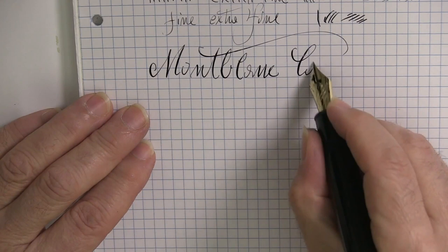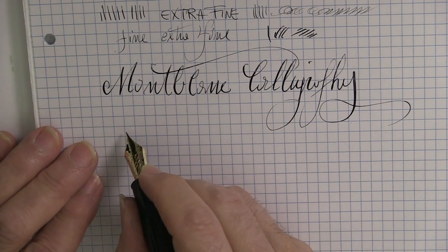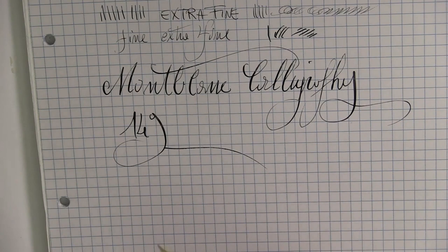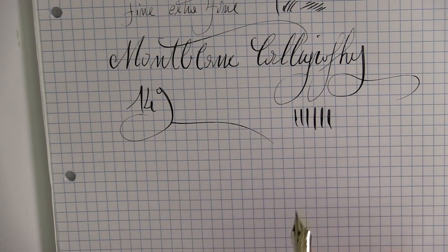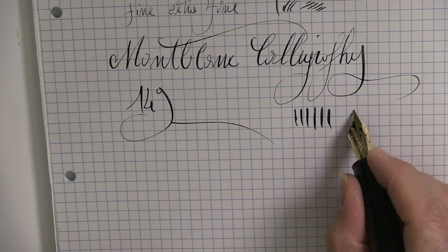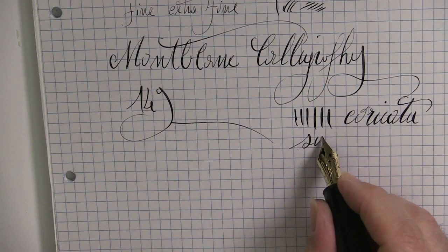The nib of the 149 calligraphy behaves quite well from this point of view, but presents a couple of critical issues in the attack and release phases. The first manifests itself with a skipping that increases when used on a paper with a very smooth finish, while the second occurs every time we release the pressure and the tines are aligned again. A certain amount of ink tends to run out instantly.